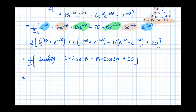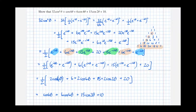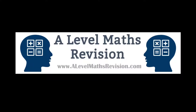Halving everything: ½ of 2 cos 6θ = cos 6θ, plus 6 cos 4θ, plus 15 cos 2θ, plus 10 (since ½ × 20 = 10). We've proved exactly what we were asked to prove: 32 cos⁶θ ≡ cos 6θ + 6 cos 4θ + 15 cos 2θ + 10. It's all about using the exponential identities to group terms in pairs to get the correct trigonometric form. For more videos, subscribe to our YouTube channel and visit a-levelmathsrevision.com.